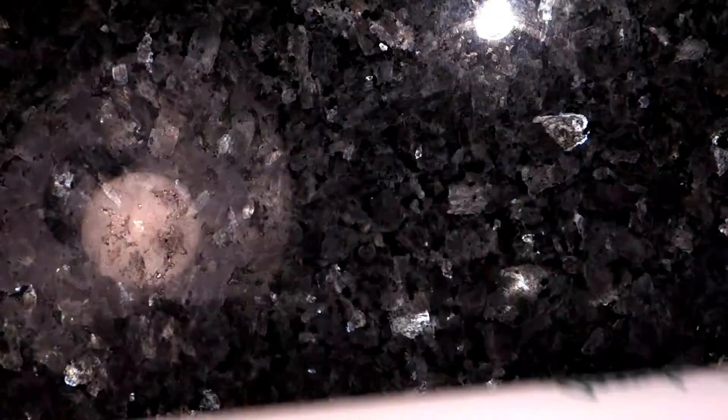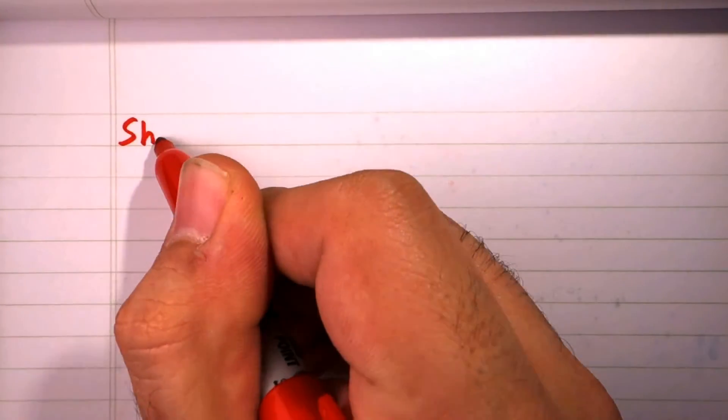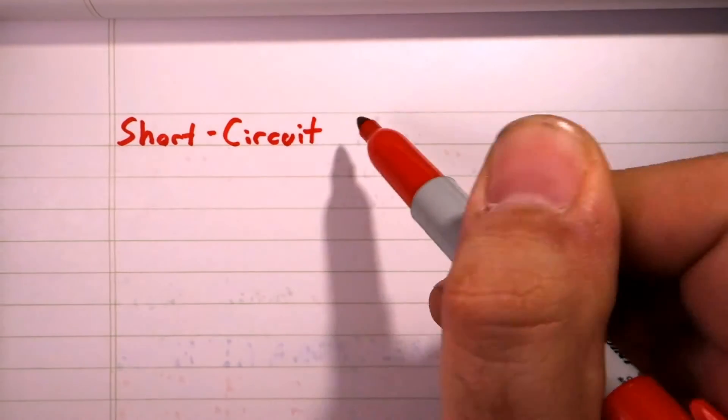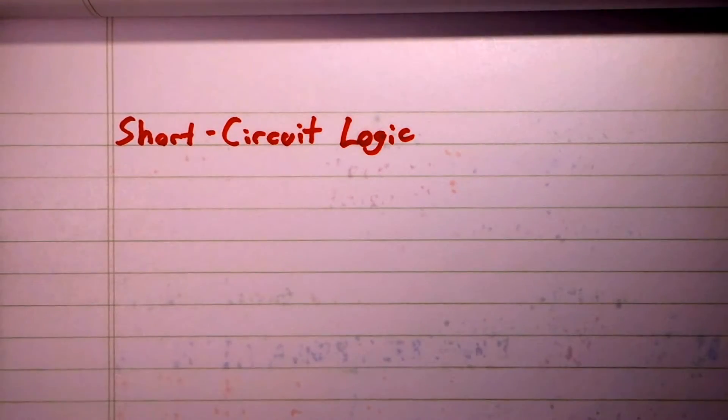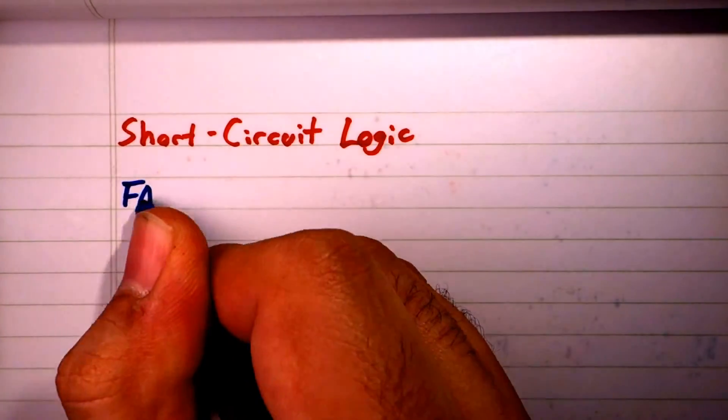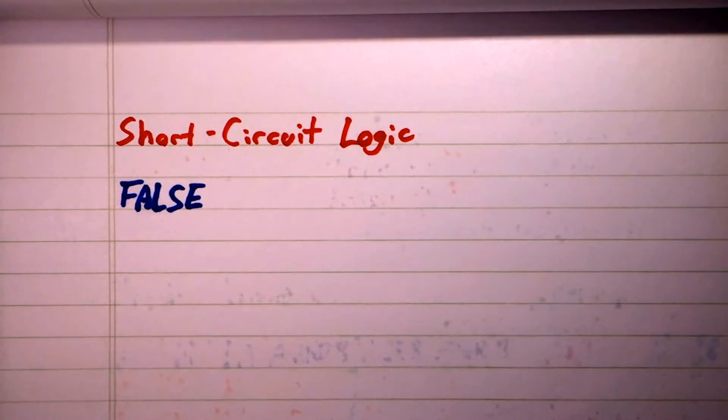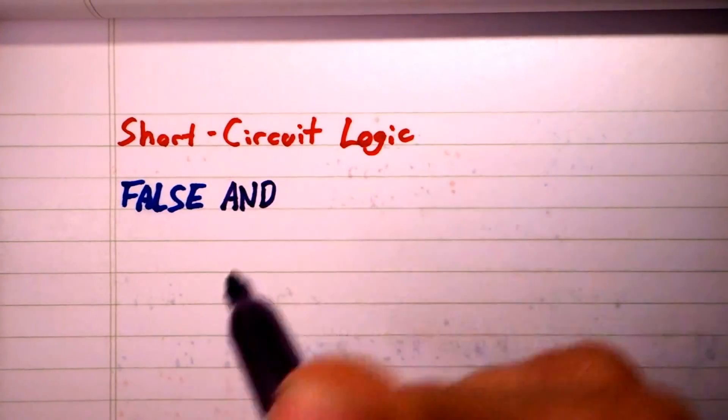However, there's a very important difference that makes them not identical. PHP uses something known as short circuit logic. Basically, that means that if it knows the result of a composite statement partially through executing it, it stops executing it.